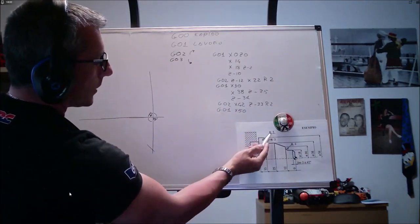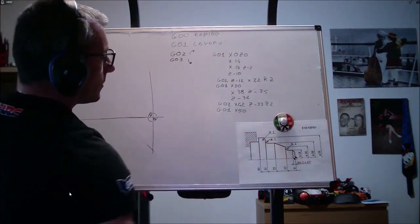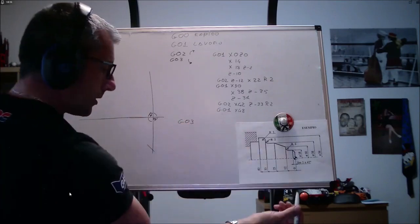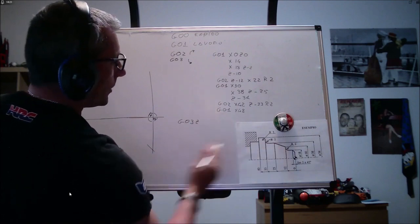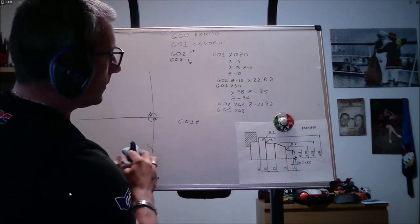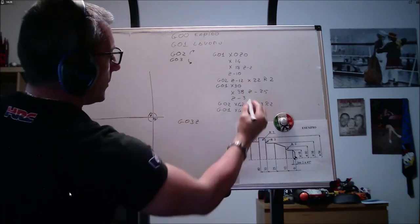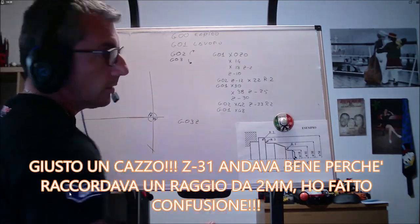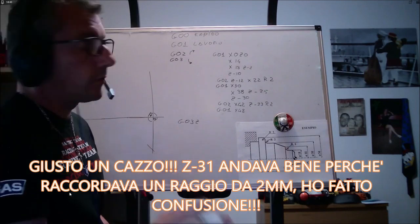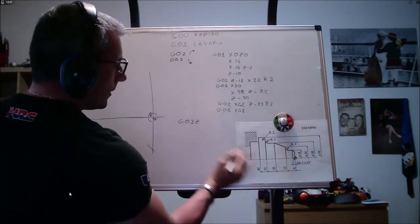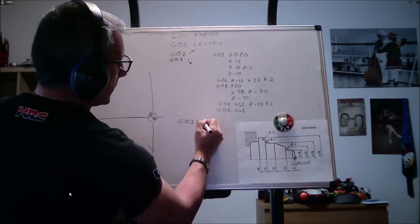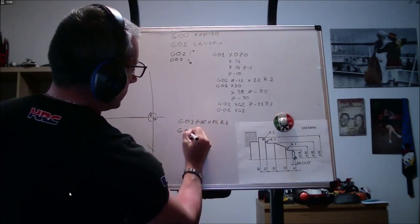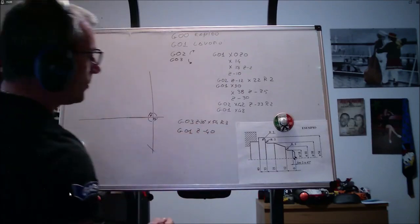Dovrò percorrere questo raggetto anti-orario. Scusate, vedete che ho fatto un piccolo errore, non ho fatto caso che qua il raggio era da 3, quindi 54 non diventa 50, ma 48. Poi abbiamo il nostro g03, percorrenza del raggio in senso anti-orario, z, quindi due piccoli errori. Anche il 33, anche il 31, 33 meno 3, 30. Visto? È un attimo sbagliare. Basta riuscire a vederlo. Il simulatore lo avrebbe, in questo caso, non lo avrebbe evidenziato, lo avrebbe evidenziato la rilevazione della quota sul pezzo, quindi troppo tardi. G03, z meno 36, x 54, r 3, e a questo punto, g01, per escludere g03, z meno 40.